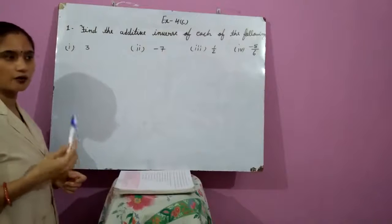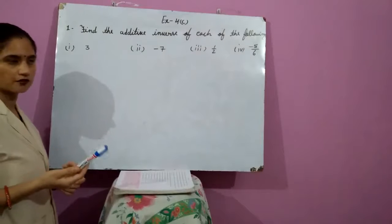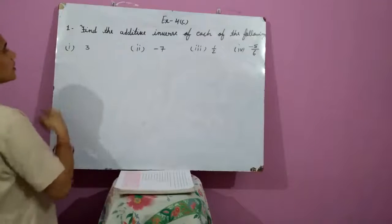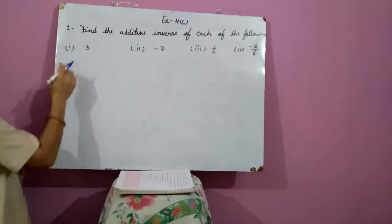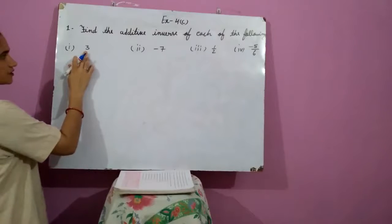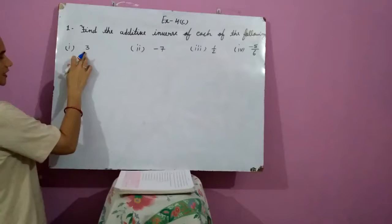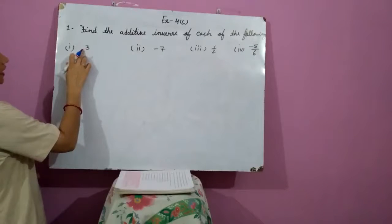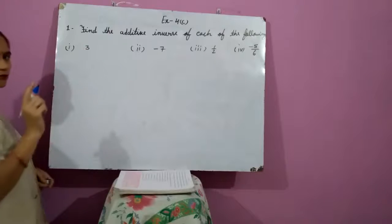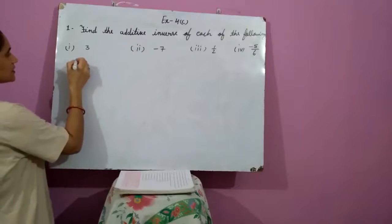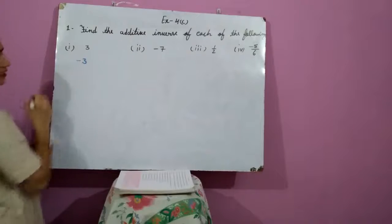Additive inverse means opposite, or sign change. Come to the first one. The additive inverse of 3 means change the sign of this number. If there is no sign, it means it is having a positive sign, and the additive inverse is minus 3.